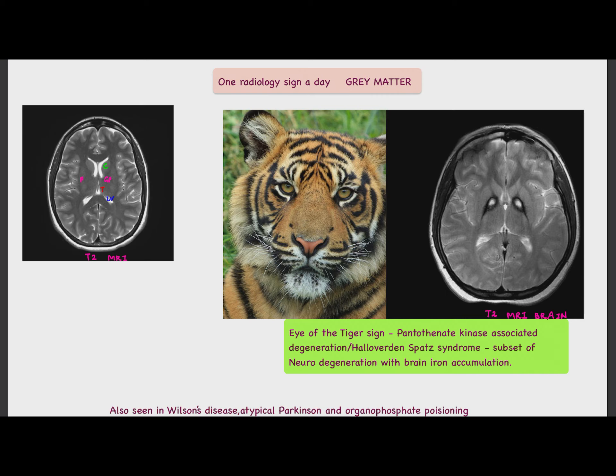It is important to note that the Eye of the Tiger sign is not pathognomonic of PKAN — it is also seen in Wilson's disease, atypical Parkinson's, and organophosphate poisoning.